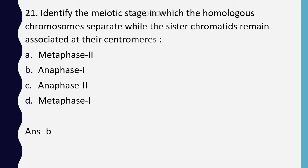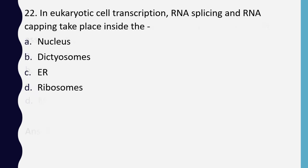Question 22. In eukaryotic cell transcription, RNA splicing and RNA capping takes place inside: nucleus, dictyosomes, endoplasmic reticulum, or ribosomes. Correct answer is option A: within the nucleus.